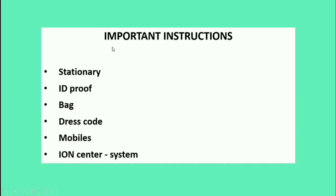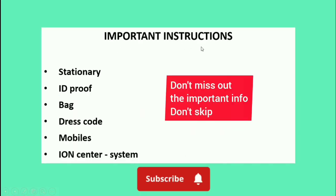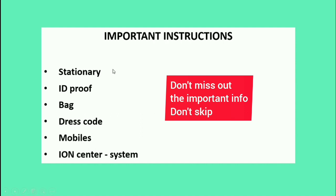Subscribe to Tech4U channel for more useful updates. Now, what are the things you need to bring to the exam hall and what is not allowed? You can bring stationery like a pen. For ID proof, it will be mentioned in your admit card — once you download it, carry any one of the listed IDs to the ION center. You will also have a bag; they will provide space to keep your bags, but bags are not allowed inside the exam hall. Regarding dress code, there is no strict dress code but formals are better, and wearing shoes is not mandatory.